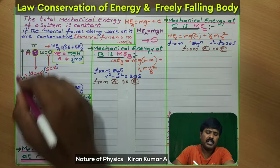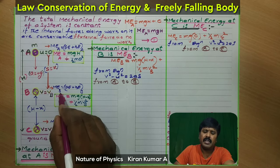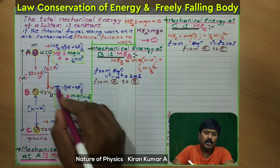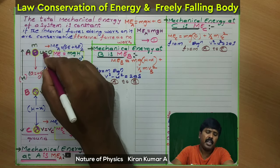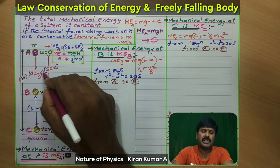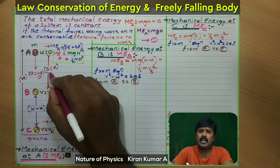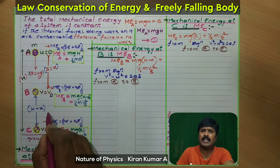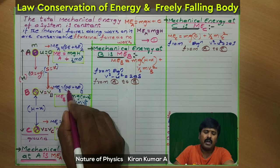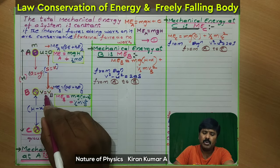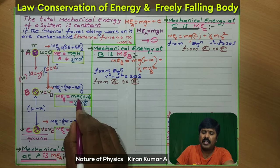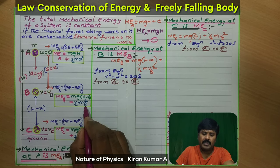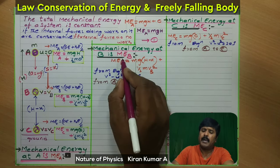Next, the body reaches position B. The mechanical energy is the sum of potential energy and kinetic energy. Due to velocity, the body gains kinetic energy, and due to height, the body has potential energy. From position A to B, the body travels downward. The remaining distance B to C represents h minus x, where x is the displacement from A to B. So mechanical energy at B is the sum of potential energy mg(h − x) and kinetic energy (1/2)mvb².